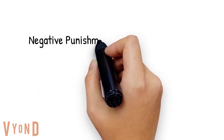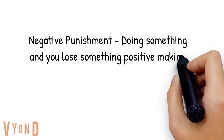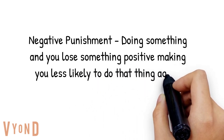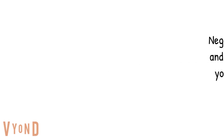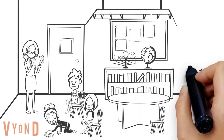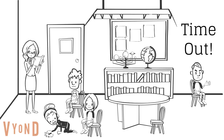Negative punishment is doing something and you lose something positive, making you less likely to do that thing again. For example, if a husband loves his wife and then cheats on her and then loses his wife, maybe that will make him less likely to cheat again because he loses something positive or something that he loves. Another famous example of negative punishment is time out — a child misbehaves and is removed from a situation where he's able to play and interact with his friends, and interacting with his friends is something he likes, so taking that away would be negative punishment.